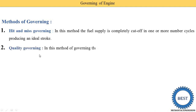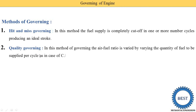Next is quality governing. Quality means the mixing ratio - that is air-fuel ratio - is changed. In this method of governing, the air-fuel ratio is varied by varying the quantity of fuel to be supplied per cycle, in the case of a CI engine, meaning a compression ignition or diesel engine.